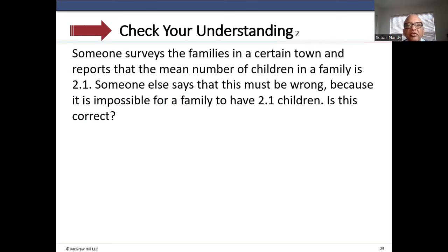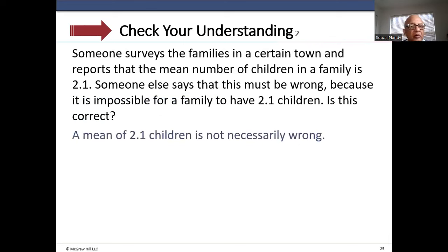Someone surveys families in a certain town and reports the mean number of children is 2.1. Someone says this must be wrong because it is impossible for a family to have 2.1 children. A mean of 2.1 children is not necessarily wrong because the mean does not have to be a value in the dataset. In practical purposes, 2.1 would be rounded down to 2 children.